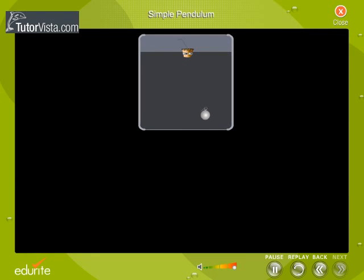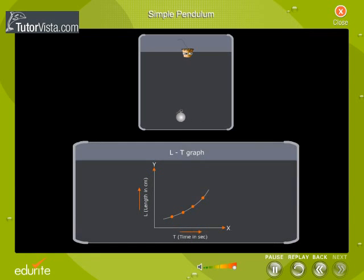Now calculate the time taken for one oscillation. Repeat the experiment for different lengths. Plot a graph with T on x axis and L on y axis.